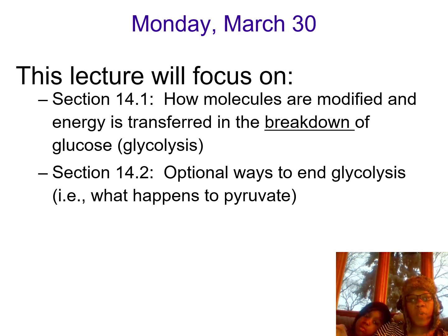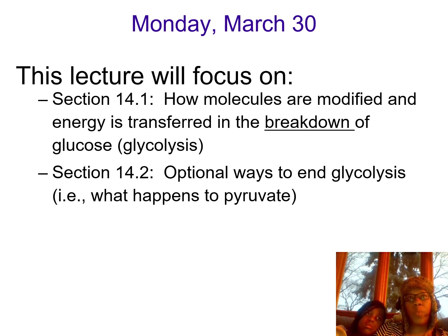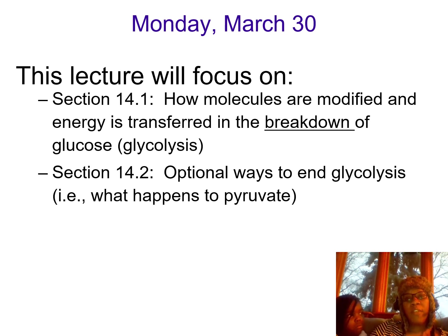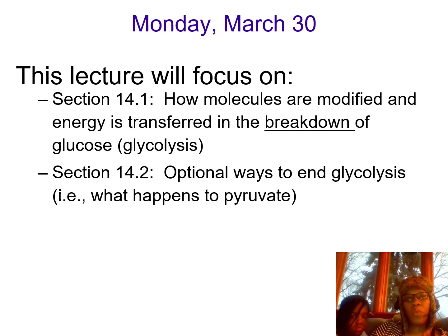Today we'll also focus on section 14.2, which are optional ways to end glycolysis. So if we have pyruvate, which is a three-carbon molecule — the last of 10 steps in glycolysis — what are the fates of pyruvate? Because we know eventually when we break down glucose, the byproducts will be carbon dioxide and water. So how do we get from the three-carbon molecule of pyruvate to just the byproduct, which is carbon dioxide and water? We'll briefly look at what are the fates of pyruvate after we're done with glycolysis.